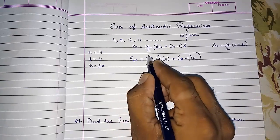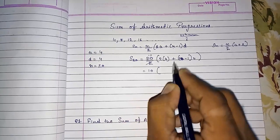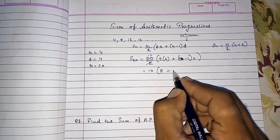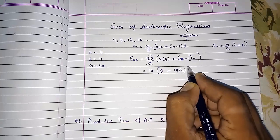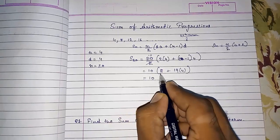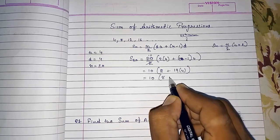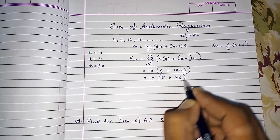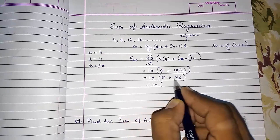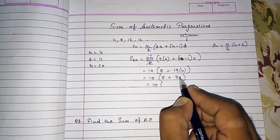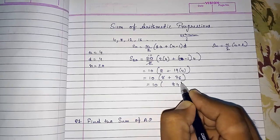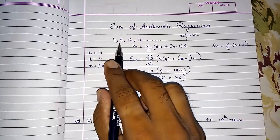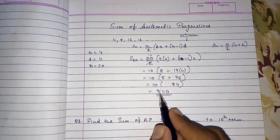We cancel 20/2 to get 10. So it becomes 10 × [2×4 + (20−1)×4] = 10 × [8 + 19×4] = 10 × [8 + 76]. Adding inside the bracket: 8 + 76 = 84. Then 10 × 84 = 840. So the sum up to the 20th term is 840.